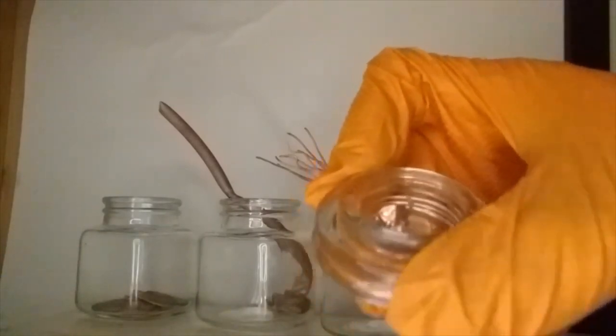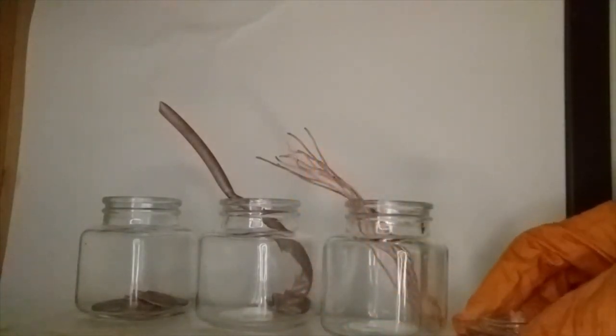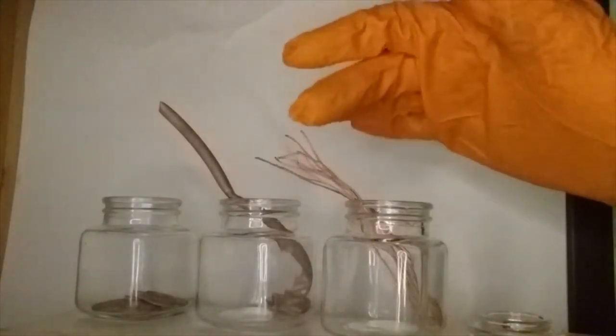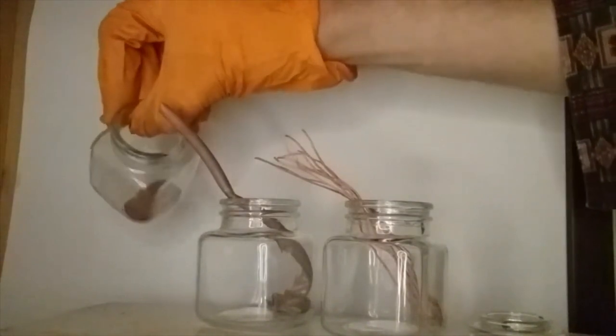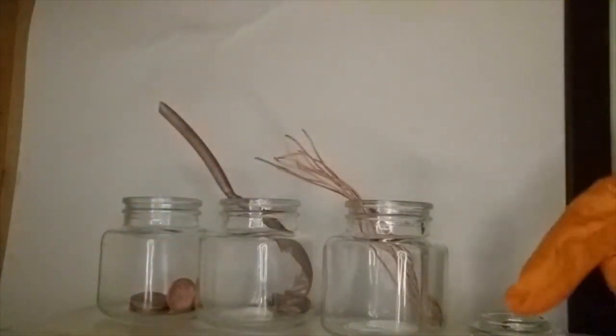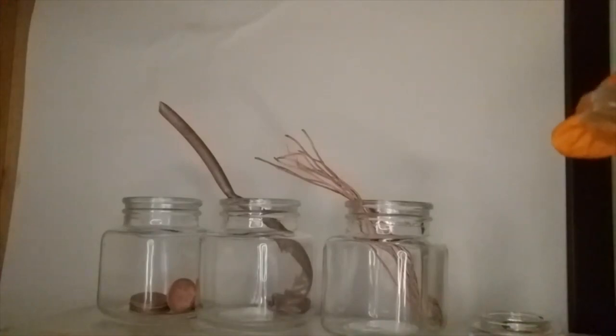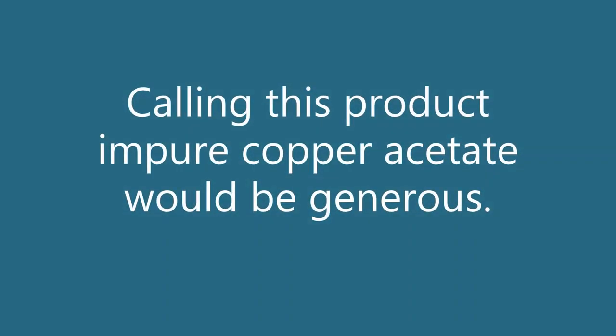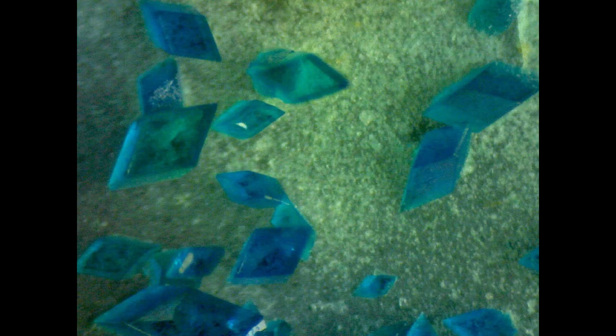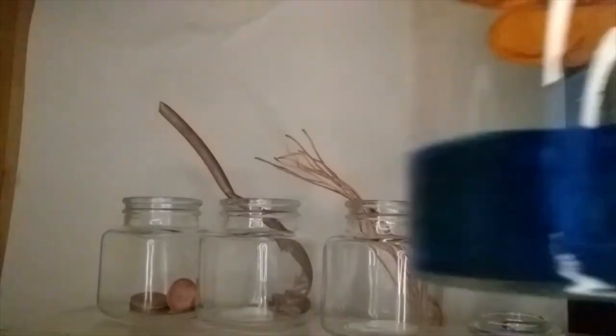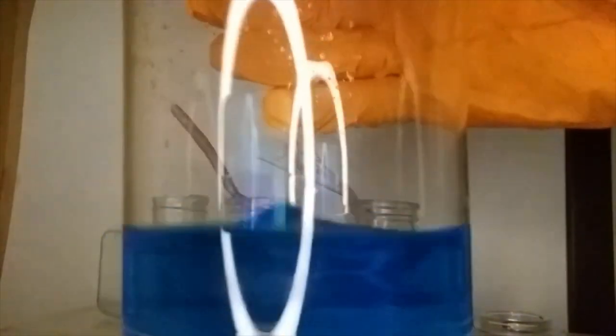There we go, a little copper foil, back here is some copper wire, in the middle is copper tubing, these are pennies from before 1982, copper acetate, some copper sulfate.